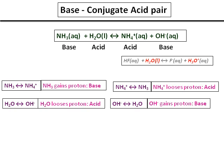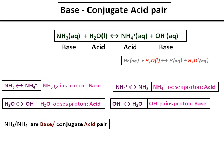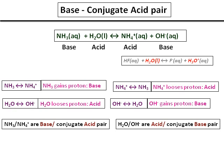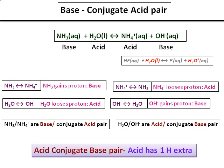Comparing with the HF example: earlier, HF reacted with water and water accepted a proton, acting as a base. But in the ammonia case, water is acting as an acid. Such compounds like water, which can act both as an acid and a base, are called amphoteric. The conjugate acid-base pairs here are: ammonia and ammonium ions (base and conjugate acid pair), and water and OH minus (acid and conjugate base pair). The acid part has one extra hydrogen.